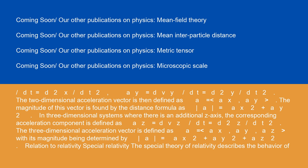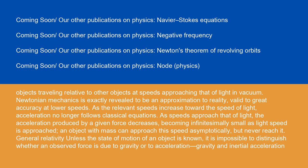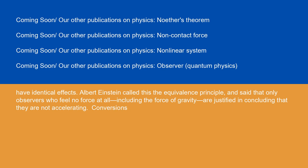In special relativity, the theory describes the behavior of objects traveling relative to other objects at speeds approaching that of light in vacuum. Newtonian mechanics is revealed to be an approximation valid to great accuracy at lower speeds. As the relevant speeds increase toward the speed of light, acceleration no longer follows classical equations; the acceleration produced by a given force decreases, becoming infinitesimally small as light speed is approached, and an object with mass can approach this speed asymptotically but never reach it. In general relativity, it is impossible to distinguish whether an observed force is due to gravity or to acceleration, as gravity and inertial acceleration have identical effects. Albert Einstein called this the equivalence principle, and said that only observers who feel no force at all — including the force of gravity — are justified in concluding that they are not accelerating.